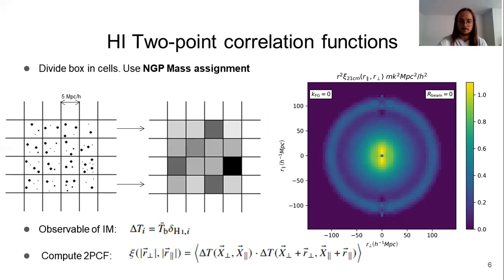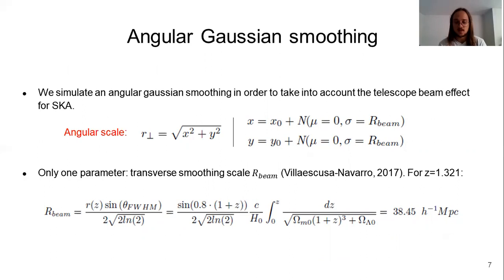The first observational effect is the angular smoothing of the signal that is produced by the telescope beam. In order to simulate it, we change the angular position of the galaxies using a random normal distribution that is centered in the position of each galaxy. And with a standard deviation equal to this parameter R beam,